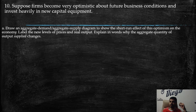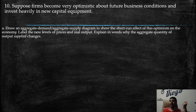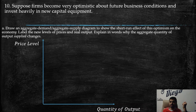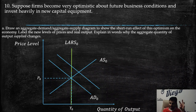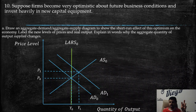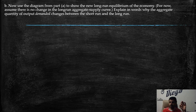Exercise 10: Suppose firms become very optimistic about future business conditions and invest heavily in new capital equipment. Part a: Draw an aggregate demand/aggregate supply diagram to show the short-run effect. Starting from equilibrium, the increase in investment — which is a component of aggregate demand — causes aggregate demand to shift to the right, keeping other variables constant. As a consequence, we face higher prices and higher quantity produced.